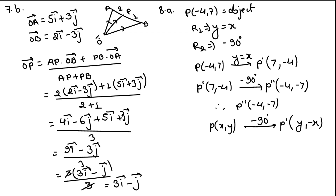Question 7b: the position vector of A is OA = 5i + 3j, and position vector of B is OB = 2i − 3j. Point P lies on line AB and divides AB internally in the ratio 2:1. We apply the section formula for internal division: OP = (2·OB + 1·OA)/(2+1). Solving, we get OP = 3i − j.